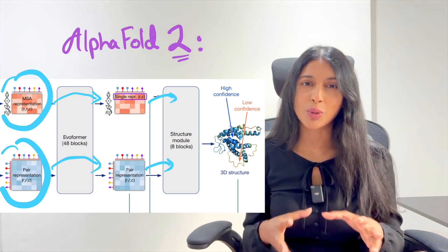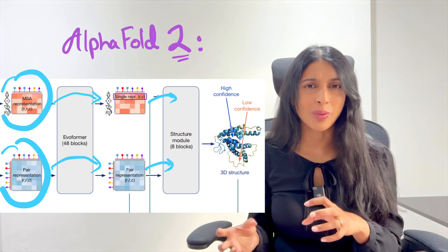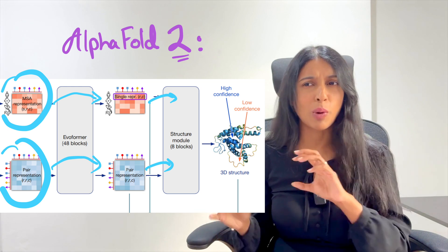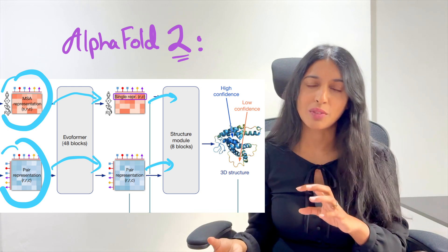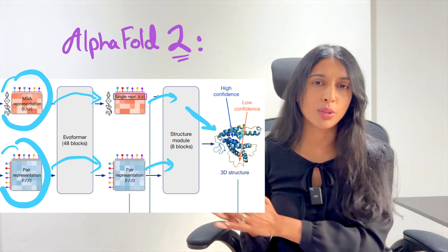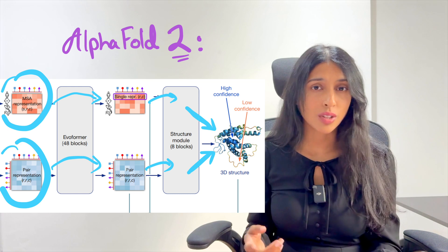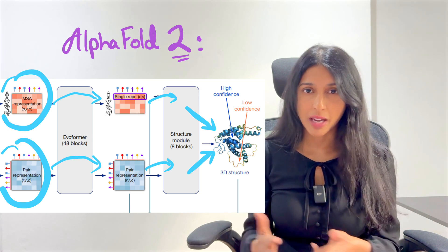So usually you would put all the information in just one object. But in AlphaFold2, there's this strange tension where there are two different objects that both encode different parts of the information about that protein. And in the end, they both contribute to figuring out what the structure is going to be. So those two things are the MSA and the pair representation.